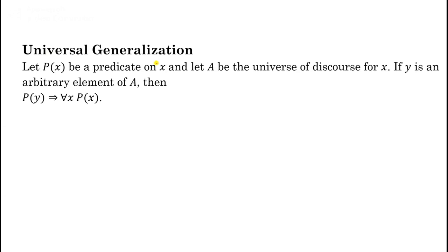Universal Generalization: let P(x) be a predicate and A the universe of discourse. If y is an arbitrary element — meaning y stands for all values of A and you can assign any value of A to y — then P(y) tautologically implies 'for all x, P(x)'. Because y is arbitrary, P being true for y automatically shows P is true for all values of A.